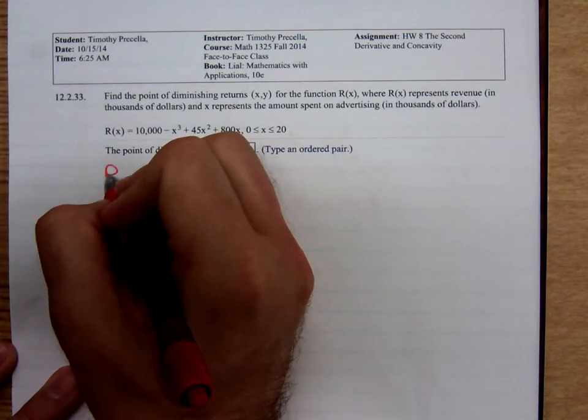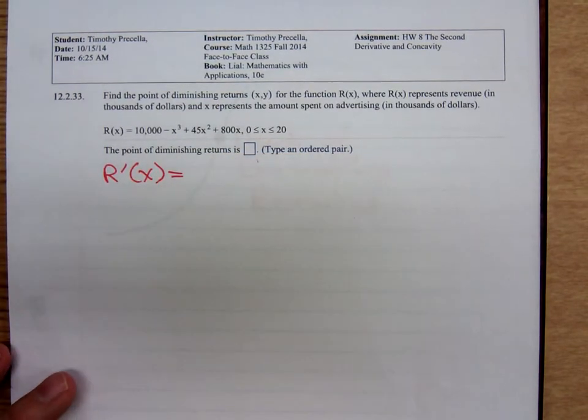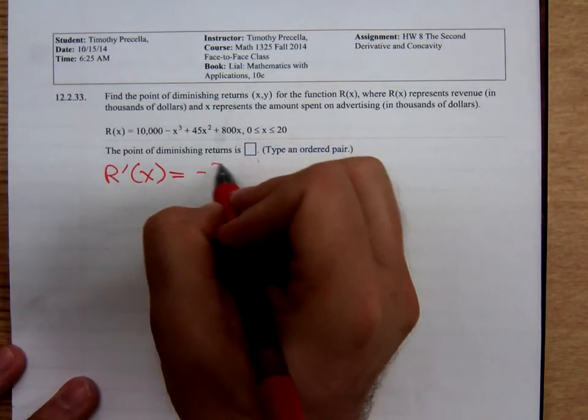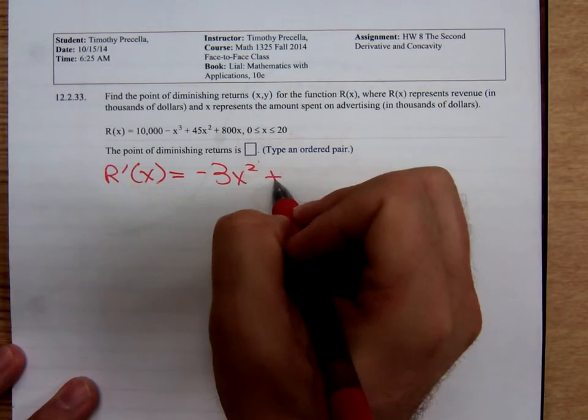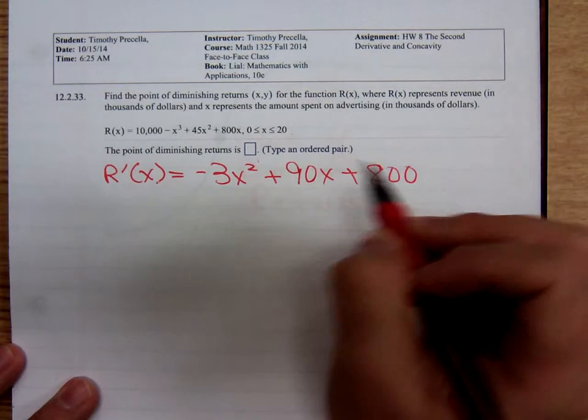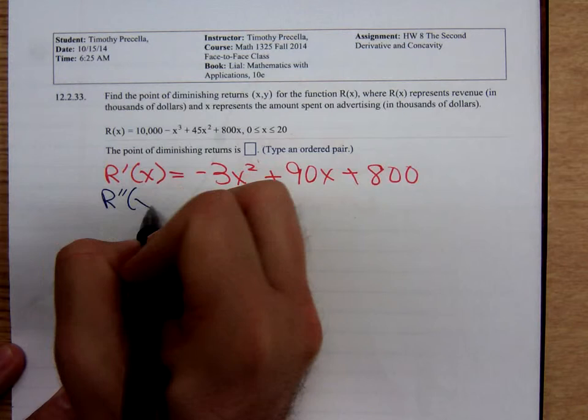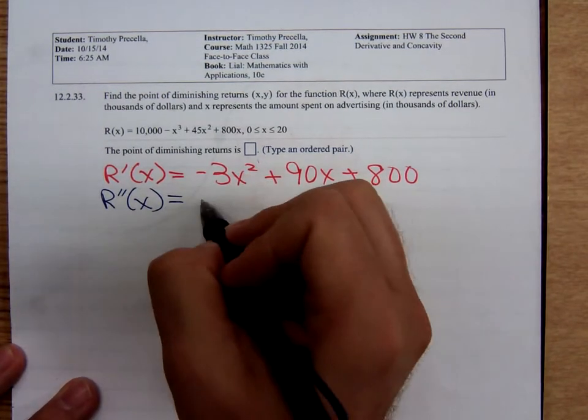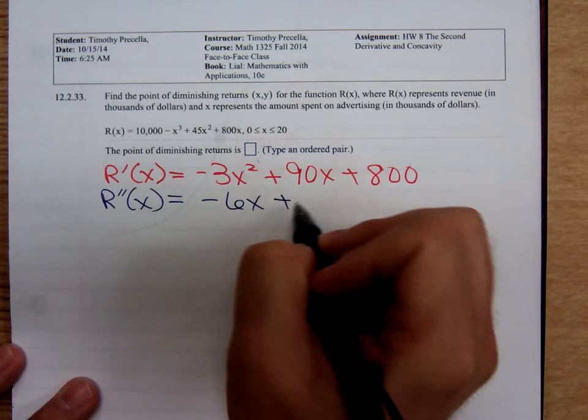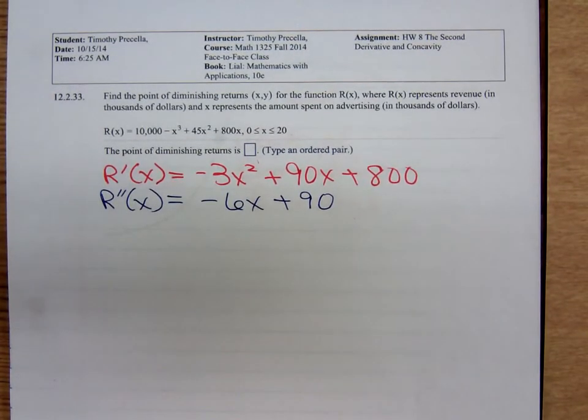So, we'll find R prime. Derivative of 10,000 is 0. So, we have negative 3x squared plus 90x plus 800. Then, we'll differentiate again. R double prime of x. That'll be negative 6x plus 90.